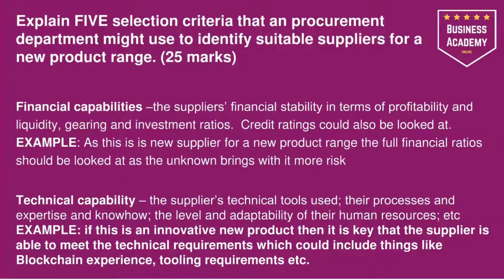Financial capabilities would be the first selection criteria — this is your statement. You then have to explain that statement. The supplier's financial stability in terms of profitability and liquidity, gearing and investment ratios, and credit ratings could also be looked at. If you're going to state liquidity, gearing, and so on, you might want to explain briefly what they are so the examiner knows you're not just throwing down jargon and you actually understand it. So we've got the statement of financial capabilities, and then the explanation going into what we mean by that: are they profitable, can they meet their debts, have they got lots of long-term loans, are they attractive to investors, and what's their credit rating score?